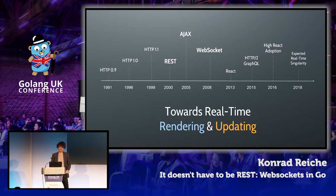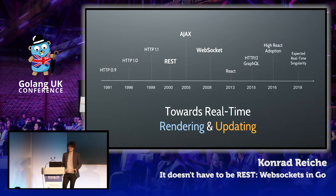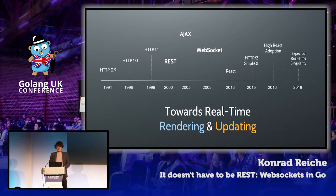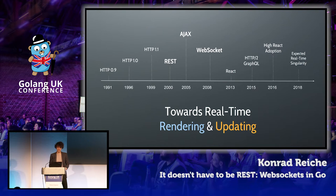With HTTP 1.1, we got persistent connections. This is super relevant because suddenly it was possible to have more than one request-response pair on the same HTTP connection. This was the first step towards more real-time communication — not real-time in the embedded sense, but rather in the sense that data comes straight from the server. Around the same time, REST was defined. Then in 2005 we got Ajax, introducing whole new ways to approach web applications. And we also got WebSockets, which allowed for the first time proper bidirectional communication on the web without hacks or workarounds, where the server was finally able to actively push messages to the client.